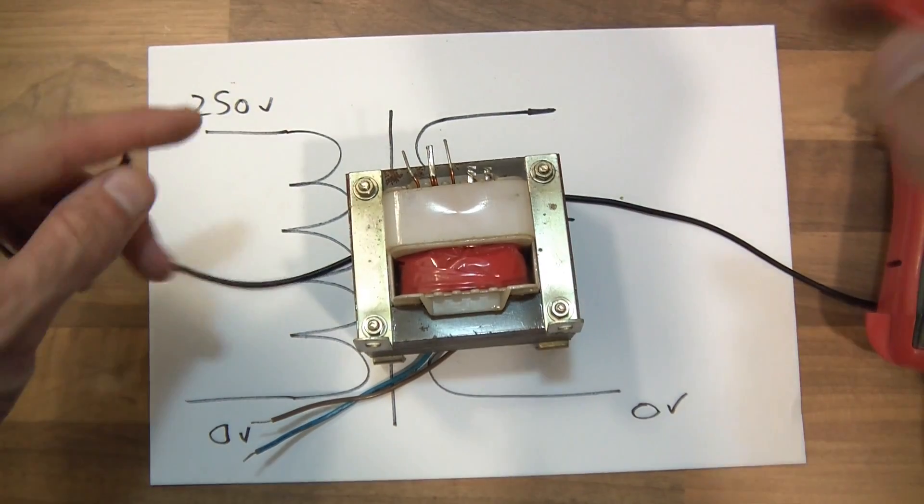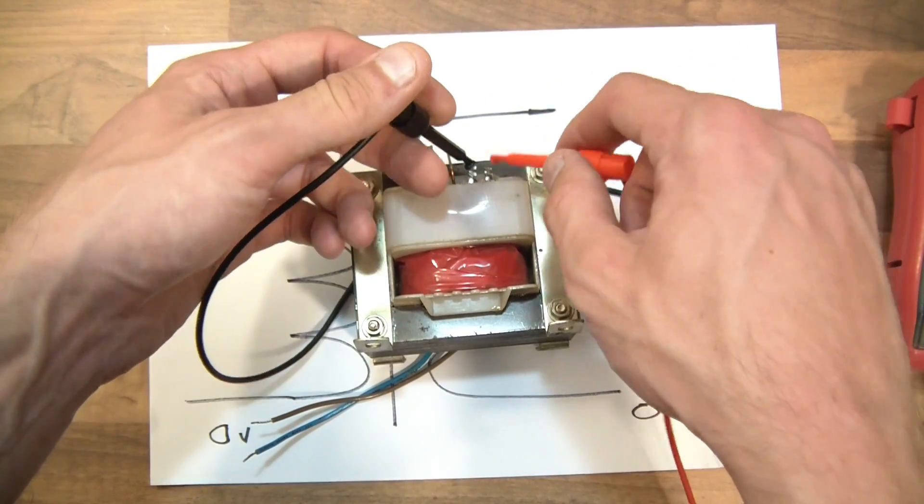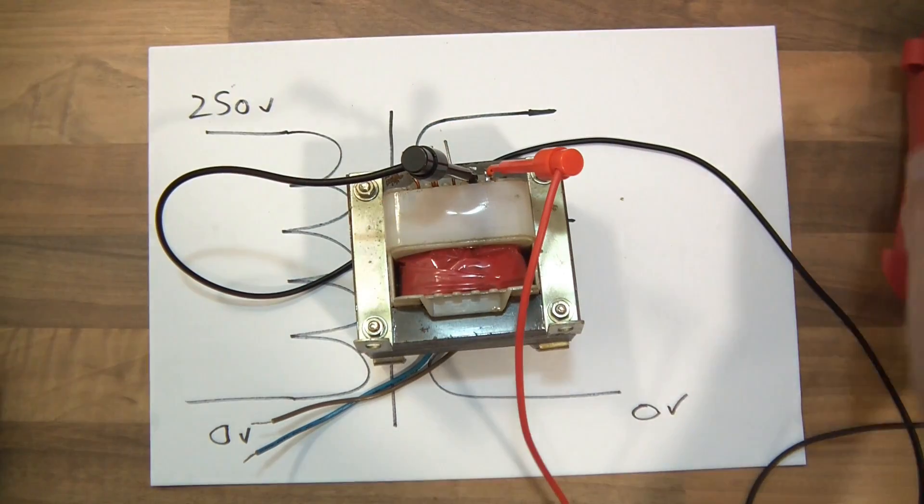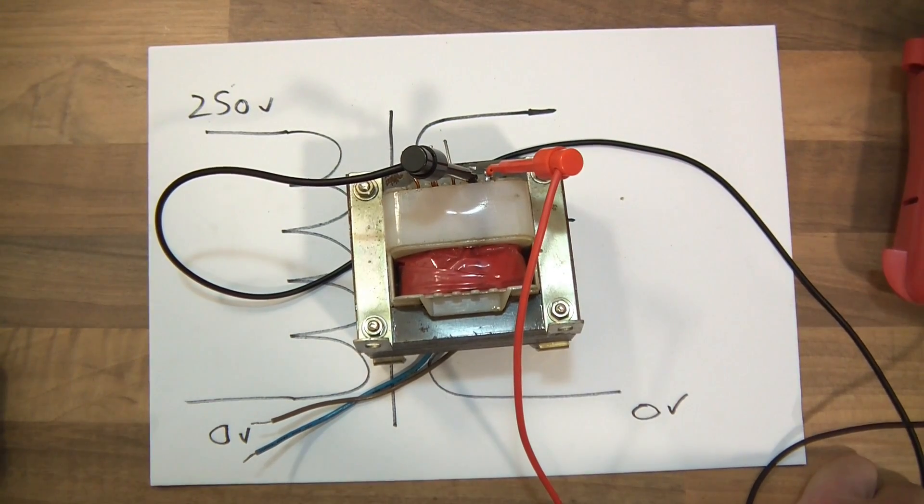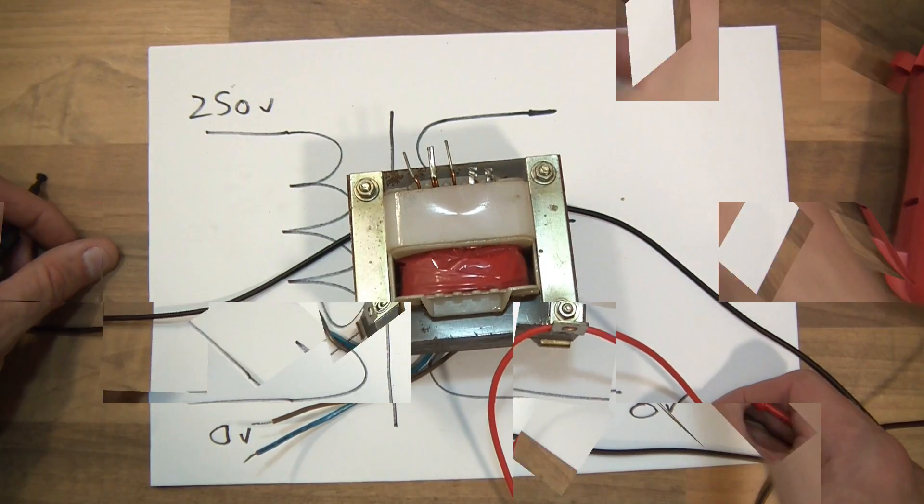Anyway let's see the resistance of this. The resistance is two ohms. So they appear to be joined together too.